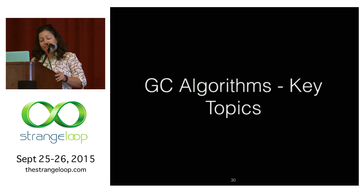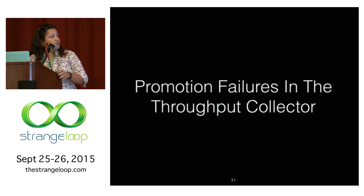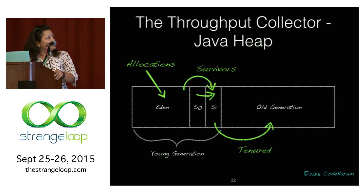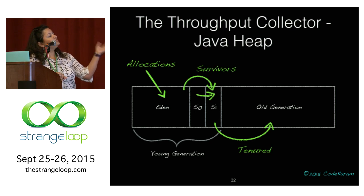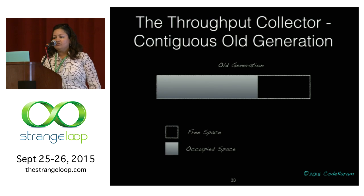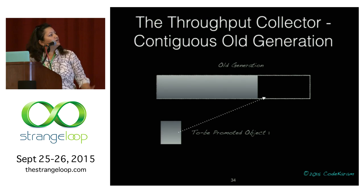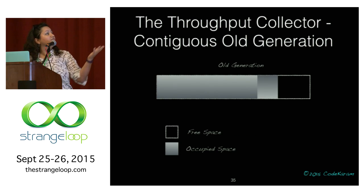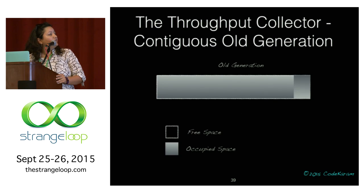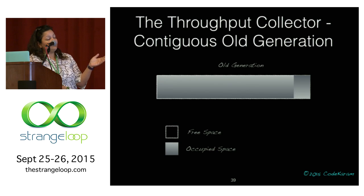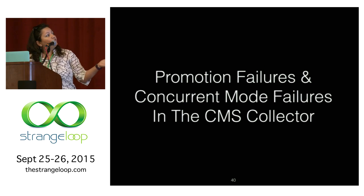Let's talk about key topics in these GC algorithms — specifically promotion failures in the throughput collector. A simple Java heap for throughput and CMS: most allocations happen in Eden, you age them in survivors, and tenure (promotion) goes into the old generation. The old generation of the throughput collector fills up through promotions, and once full, parallel mark, sweep, and compaction happen for the entire heap — that's an old generation collection.